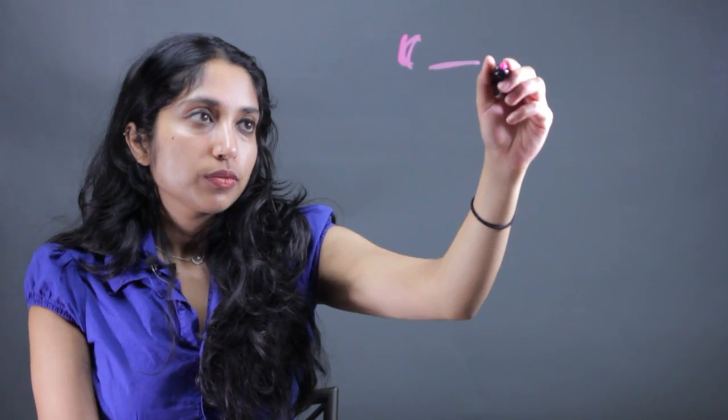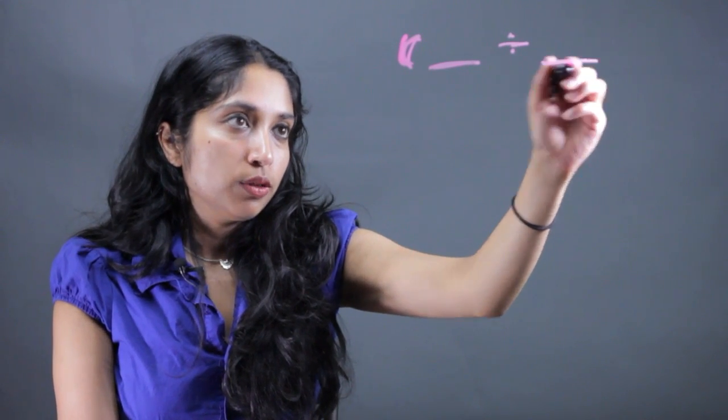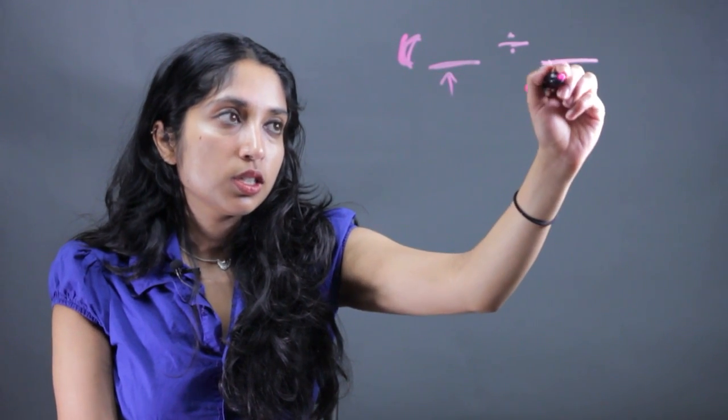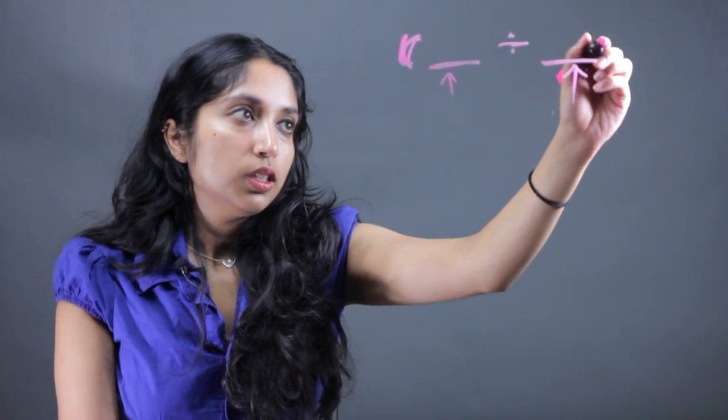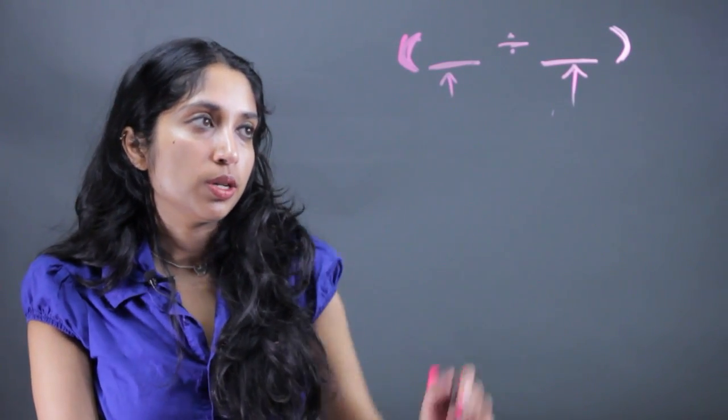you start with the parentheses, enter in the value, hit the divide button, enter in the other value. This is the numerator and this is the denominator, and close that parentheses. That will enter our fraction into our calculator.